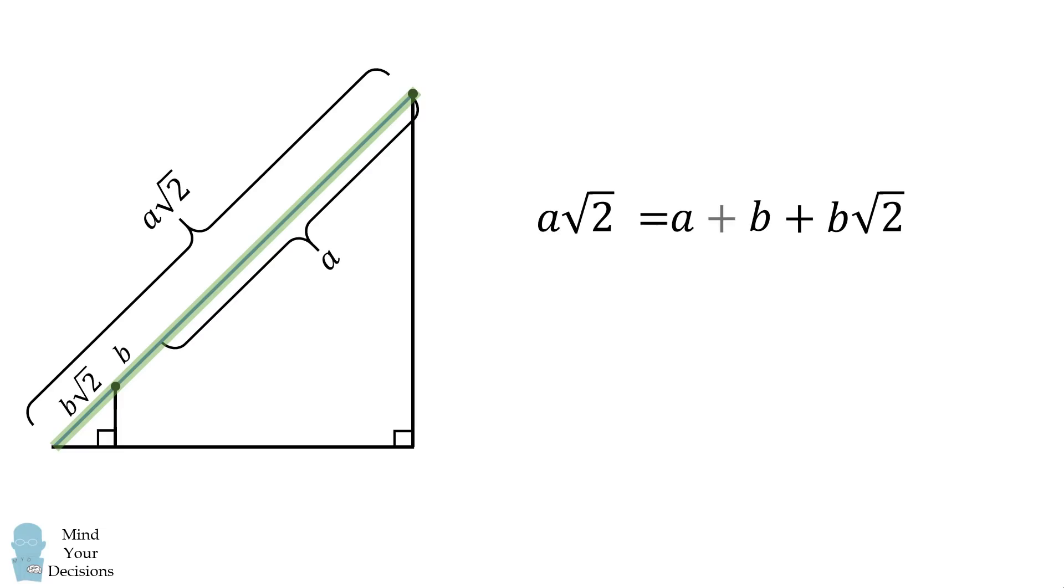We then subtract a from both sides of the equation. We then factor on both sides. We then divide both sides by b and both sides by the square root of 2 minus 1. We thus get that a divided by b is equal to the square root of 2 plus 1 all over the square root of 2 minus 1, which is approximately equal to 5.828, and that's the answer.